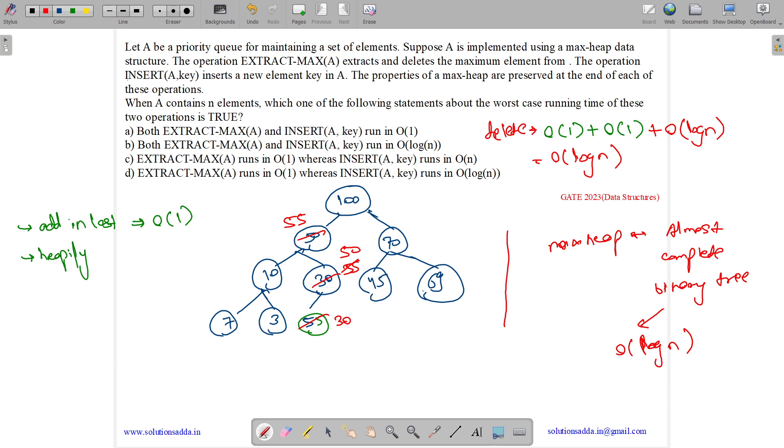So worst case, what can happen? Worst case, we can go to the entire height. And in best case, we will do only one or two steps. So worst case, it will take order of log n. And even this question is asking about worst case running time. So for insert, what is the complexity? Sum of these order of one plus order of log n. It's order of log n. So what is the complexity? Delete order of log n and insert order of log n. So answer is option b. Both EXTRACT_MAX, which is delete, and INSERT run in order of log n. So answer is option b.